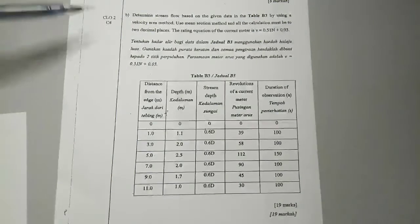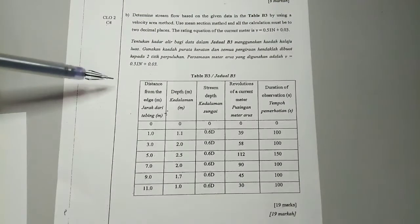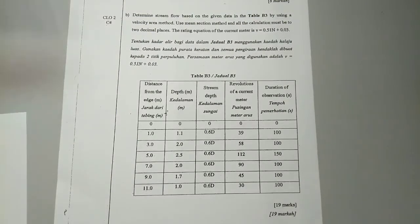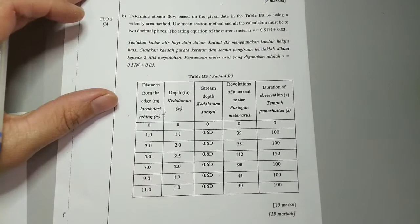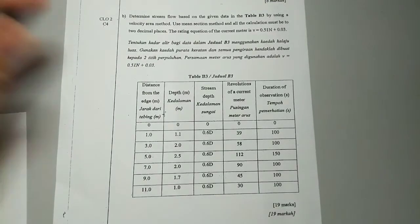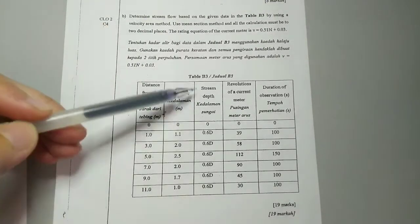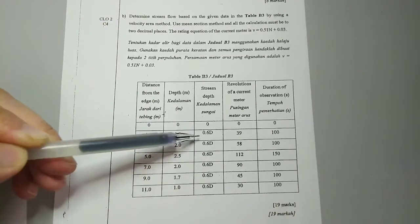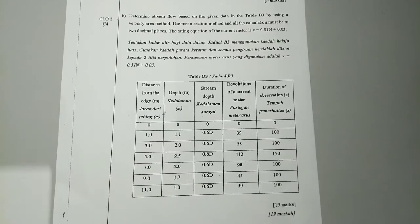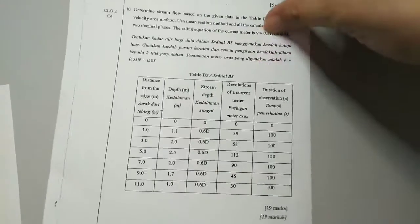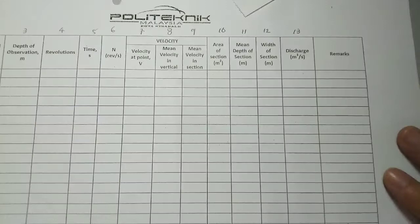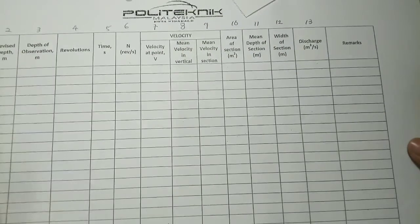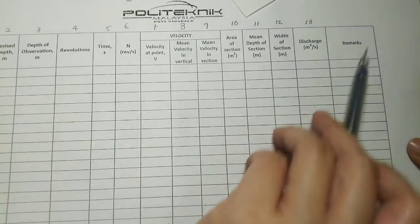Today we will discuss again questions for the mean sections method. This is from one of the final exam questions. From the question, the stream depth is taken at only one point — 0.60. For the final exam, you will be given various types of tables, for example these types.